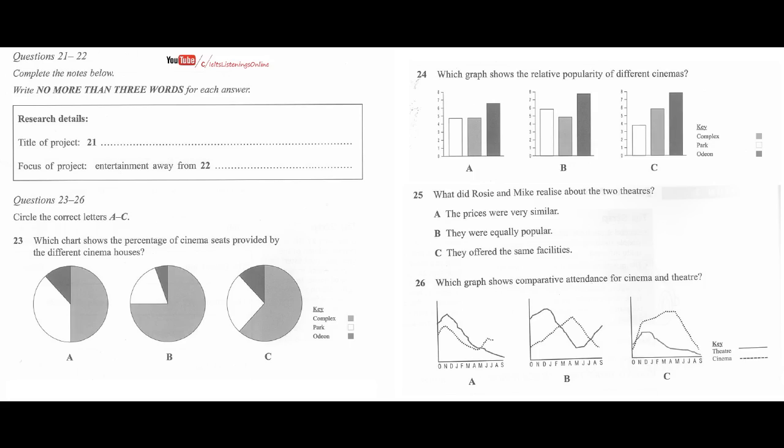Right. OK, well, first of all, cinema. In the town, there are three main places where you can see films. There's the new multi-screen cinema complex, the old park cinema, and a late-night Odeon. So, if you look at this chart, in terms of audience size, the multi-screen complex accounts for 75% of all cinema seats. The park cinema accounts for 20% of seats, and the late-night Odeon has just 5% of seats.